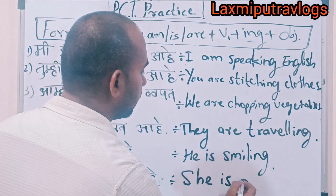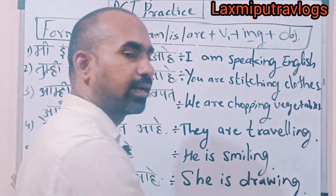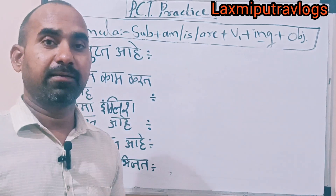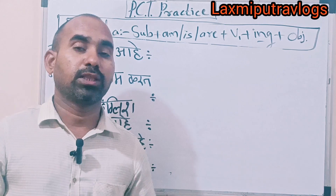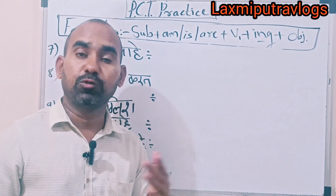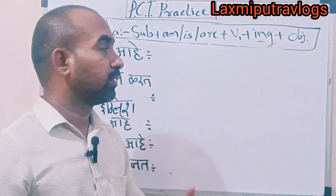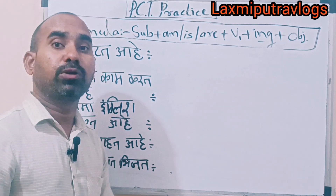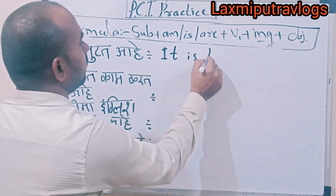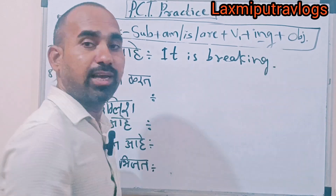Next: 'It is drawing.' 'It' is used for mostly non-living things and when we don't know the gender. For example: 'It is breaking.'